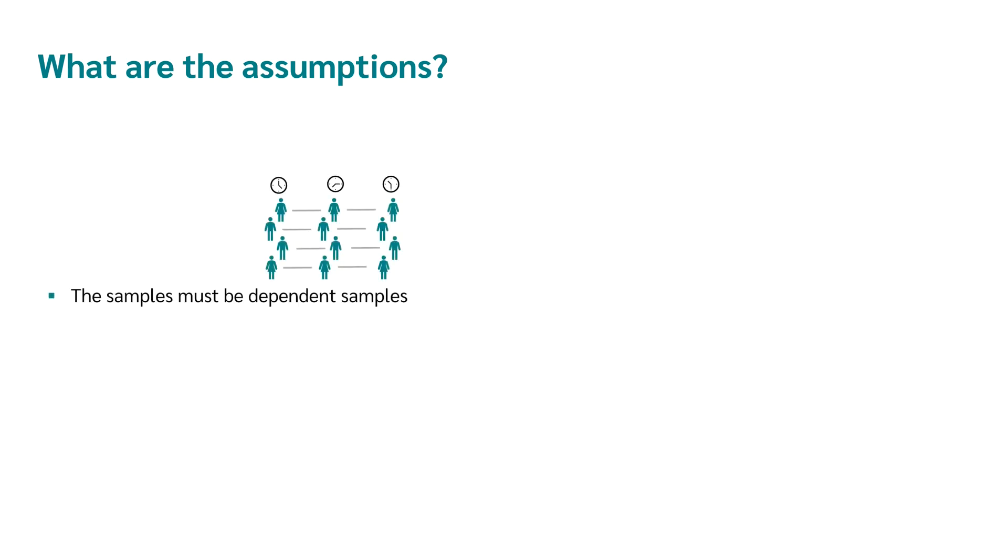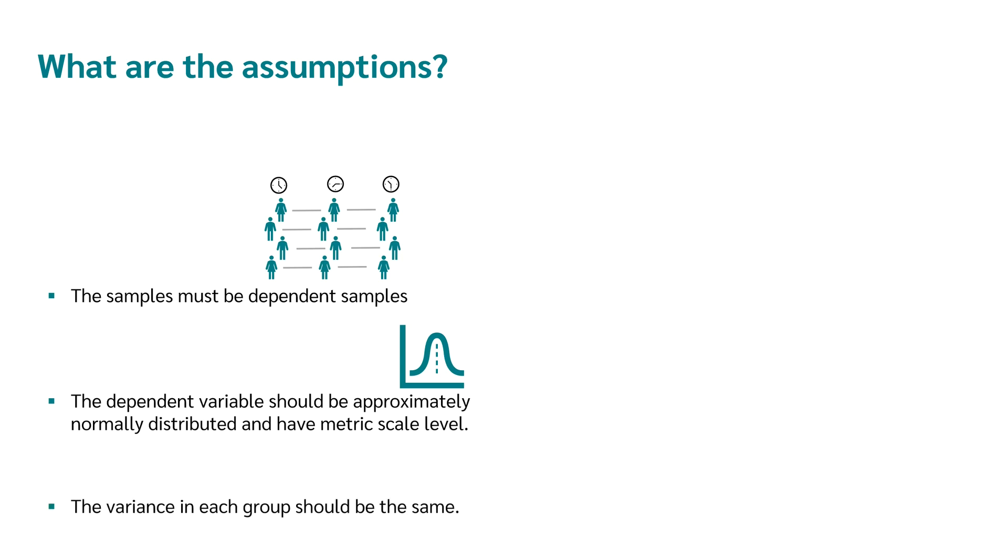The first assumption is that we must have dependent samples. The next assumption is that the data should be approximately normally distributed and should have a metric scale level. And finally, the variance in each group should be equal.